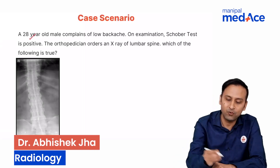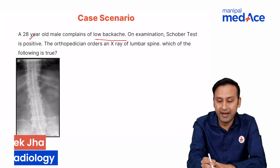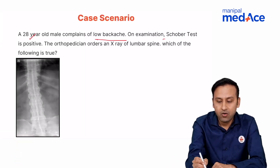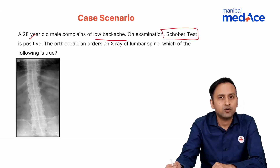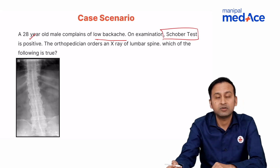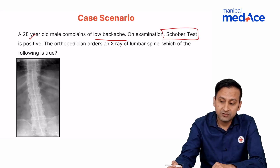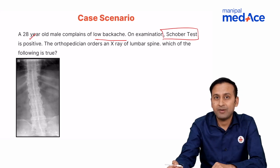There is a 28-year-old male who is complaining of low backache. On examination, the Schober test is positive. The Schober test basically tests the flexion of the spine, so it means there is some disease which is causing abnormalities in the flexion of the spine.